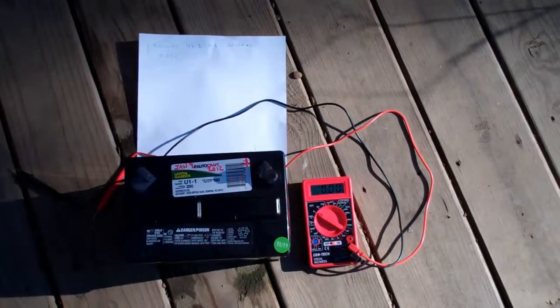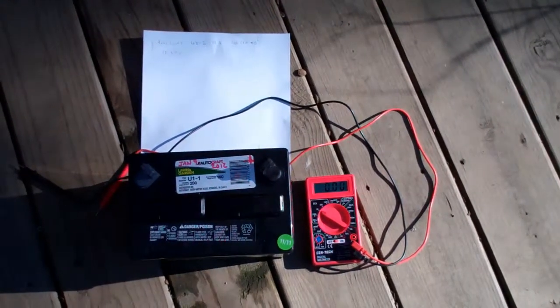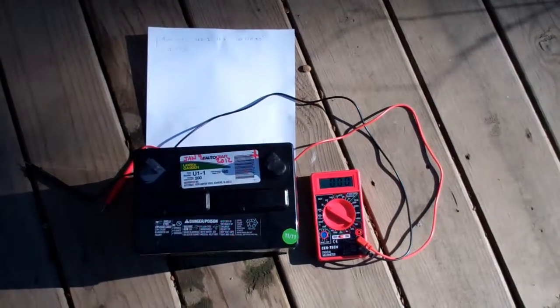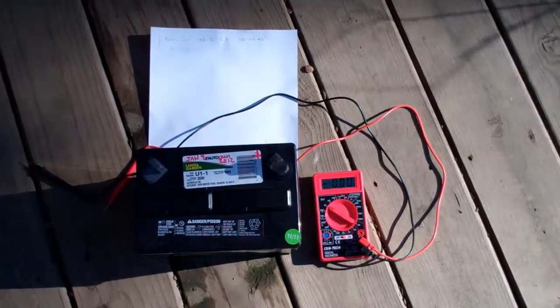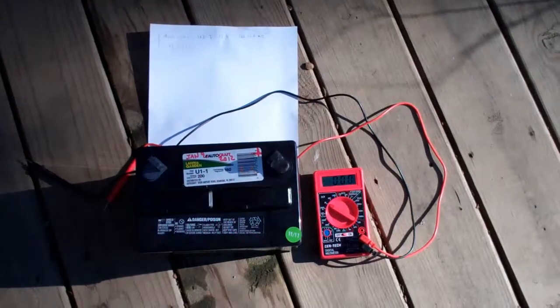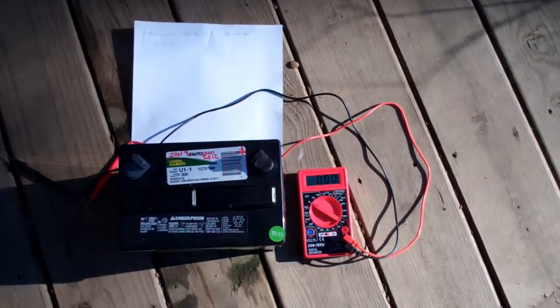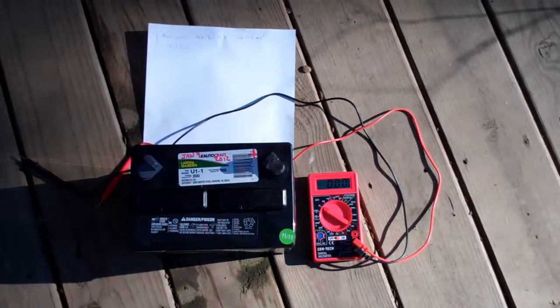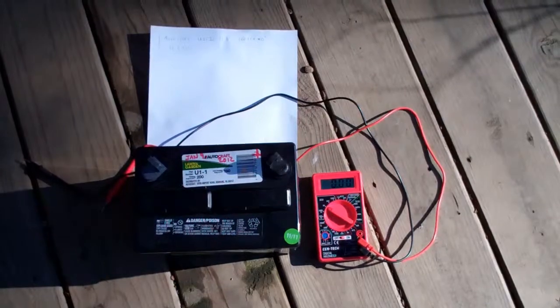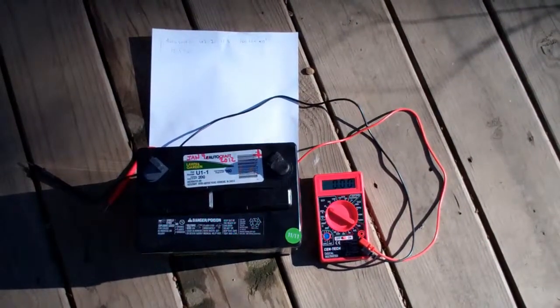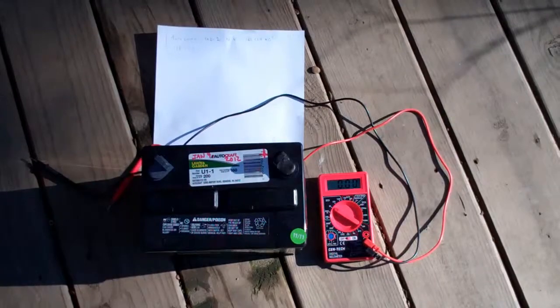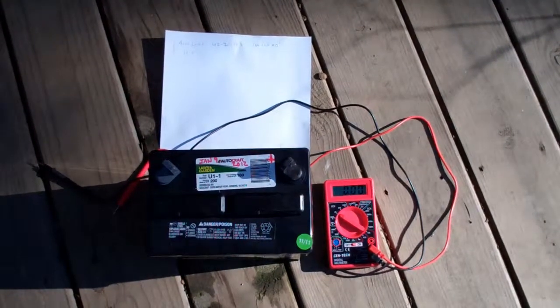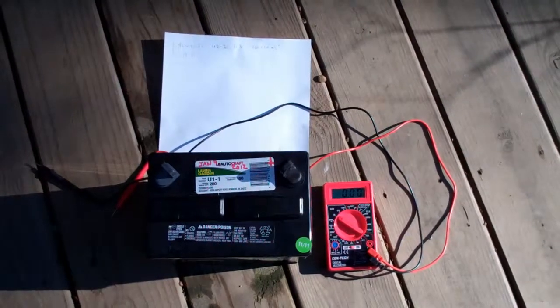It has been a while since we last made a video on our ongoing solar charging test bed and backyard security lighting project, so we thought we'd bring you up to date. Here we have a new battery that we're going to use to replace the old semi-dead car battery that we had been charging with this system. The new one is an Autocraft U1-1, 12 volts, 160 cold cranking amps at zero degrees Fahrenheit. As delivered, the charge is 12.57 volts.